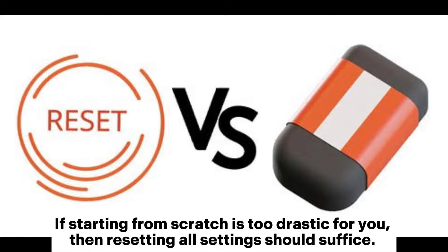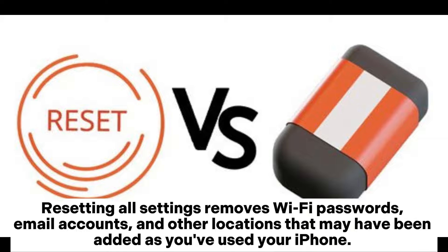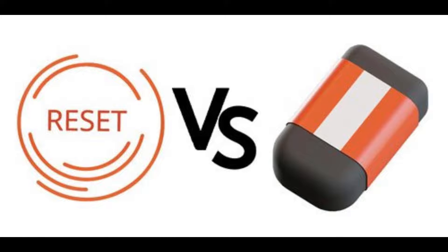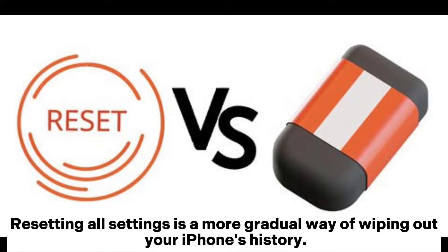If starting from scratch is too drastic, then resetting all settings should suffice. Resetting All Settings removes Wi-Fi passwords, email accounts, and other locations that may have been added as you've used your iPhone. Resetting All Settings is a more gradual way of wiping out your iPhone's history.